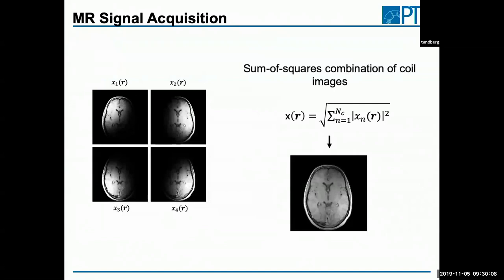The easiest approach — and one of the exercises you'll do today — is to sum up the squares of these images. I have images from four different coils, I just sum them up and get a combined image. This is the easiest way because I don't need any additional information, just the data from the different coils.